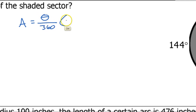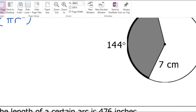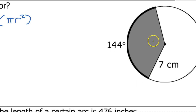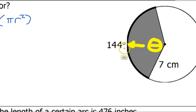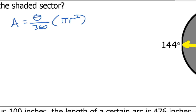The total area formula is pi r squared, so sector area equals (theta / 360) times pi r squared. Theta is the measure of the central angle, which equals the arc measure. In this problem, they gave the arc measure in degrees, so theta is 144.